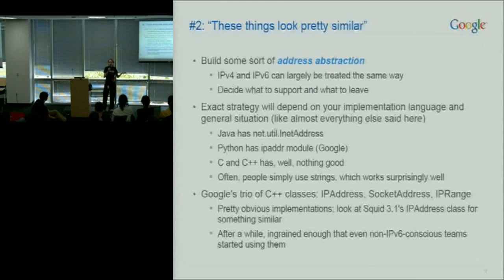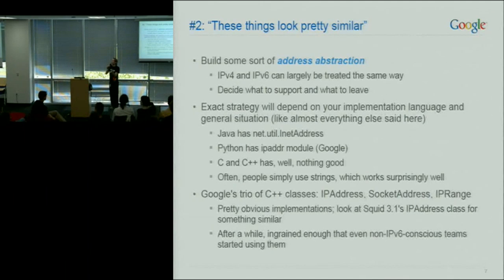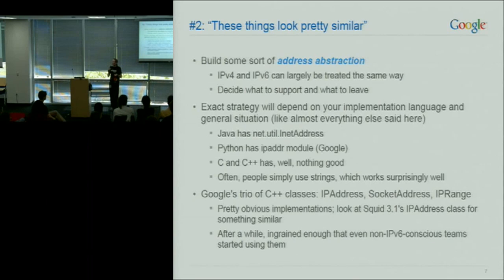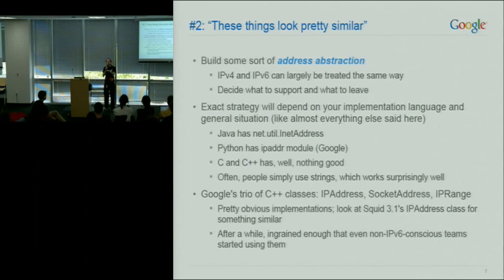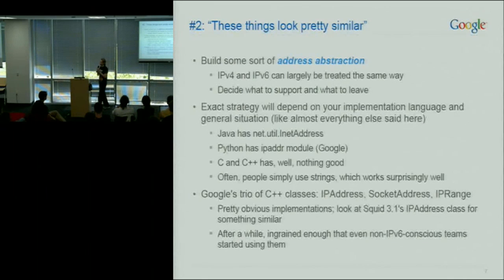These types are not magic. They are not hard to make. You can look at Squid, for instance, which has something similar. But you must decide to what level you want things to be abstracted. We got pushback at some point because we didn't support Unix domain sockets. You might want to pull DNS into this, but I wouldn't recommend mixing a hostname and an IP address — Java tried to do that and it has problems. Decide what you want to abstract and build something simple.